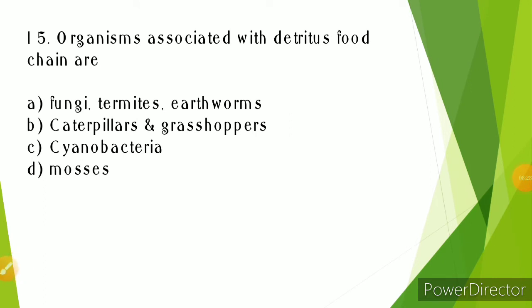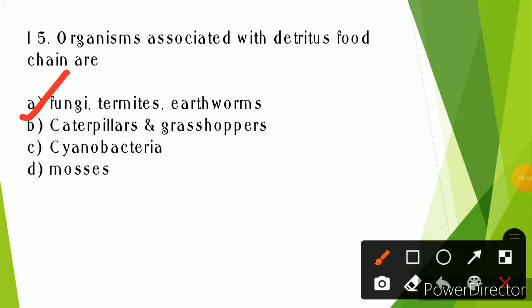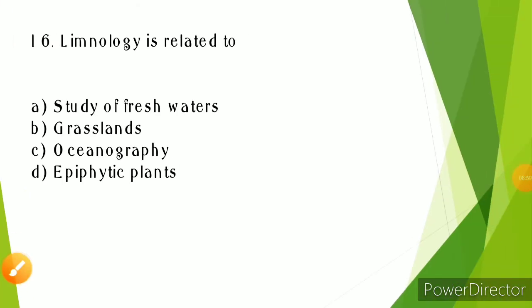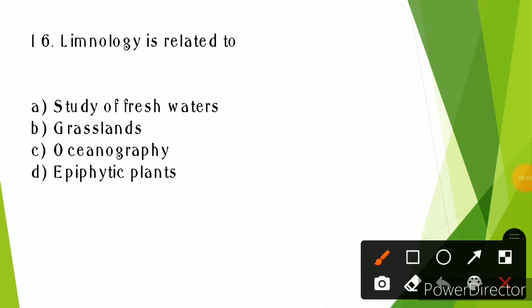Organisms associated with detritus food chain - detritus food chain involves decomposers because they feed on dead organic matter. For example, fungi, termites, and earthworms. Earthworm is called a farmer's friend because it helps in the aeration of soil. Limnology is related to the study of inland water - lakes, rivers, and wetlands. These are freshwater bodies. The study of freshwater is called limnology. Oceanography is related to the ocean.